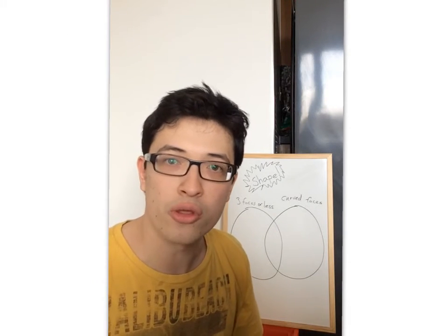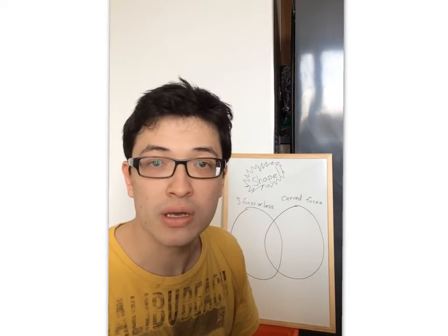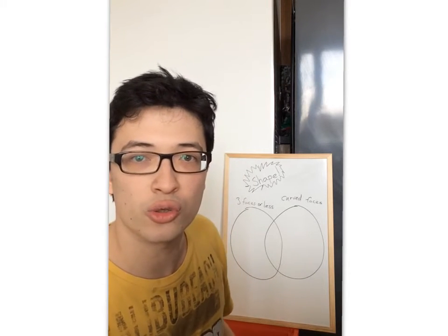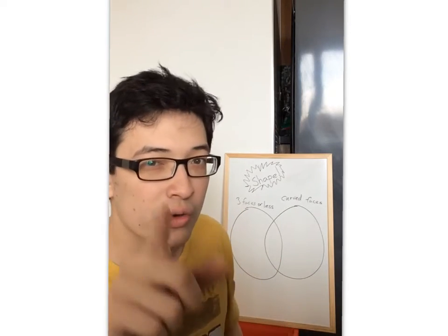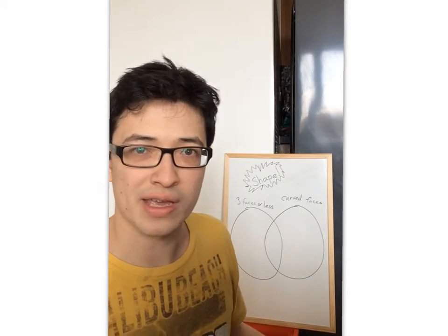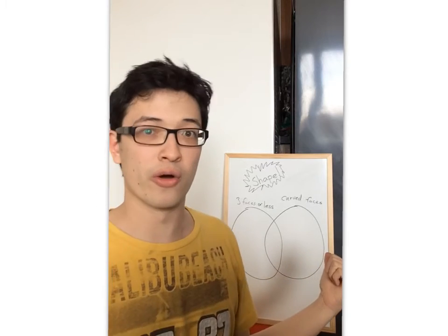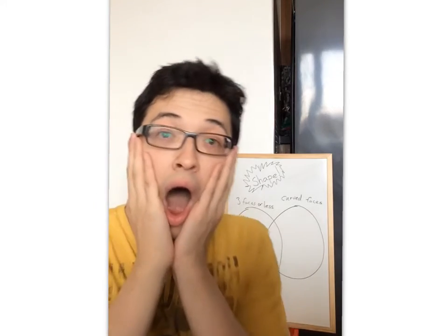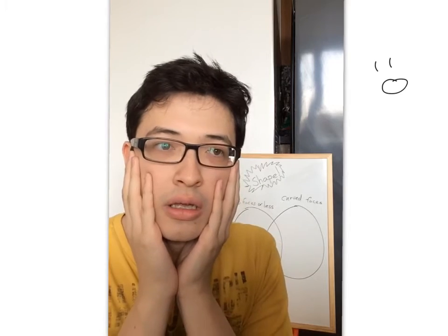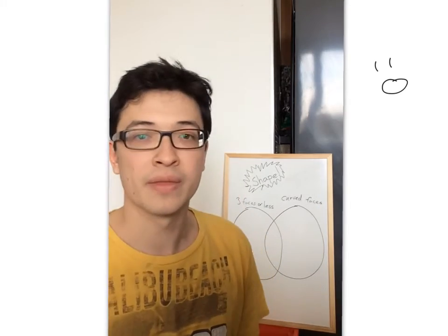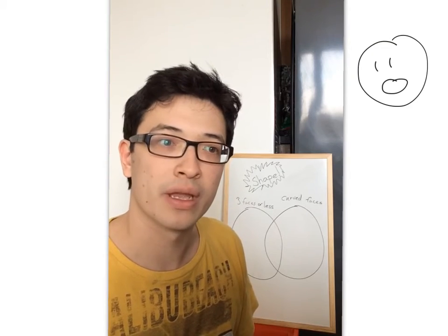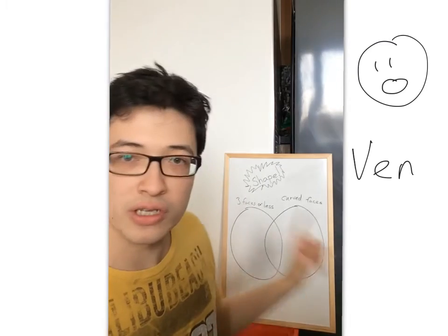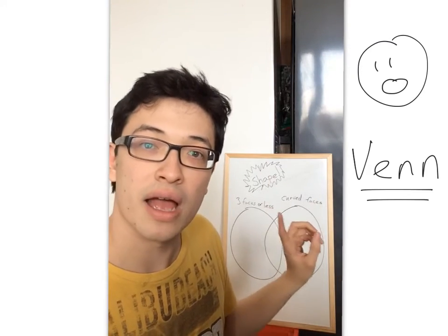Right, so now that we know the properties of 3D shapes, we can have a go trying to sort them into different groups. Now, I know what you're thinking. You're thinking, Mr. Walker, those are just two overlapping circles. But they're not. What you say? I know, right? This is what we call a Venn diagram. Both circles need a label.